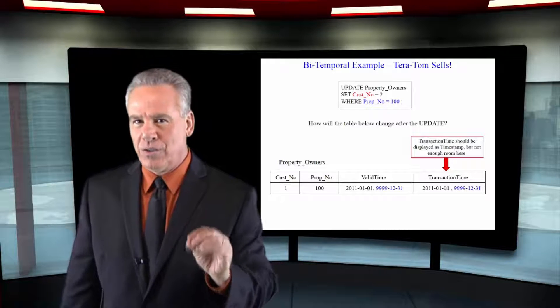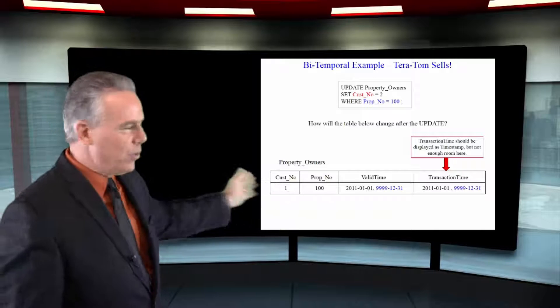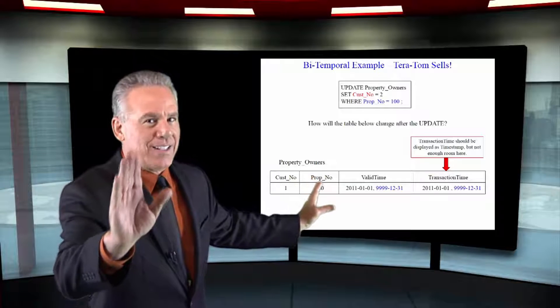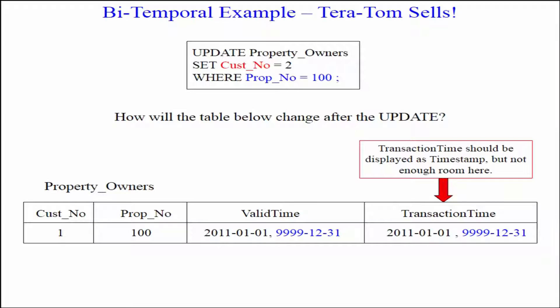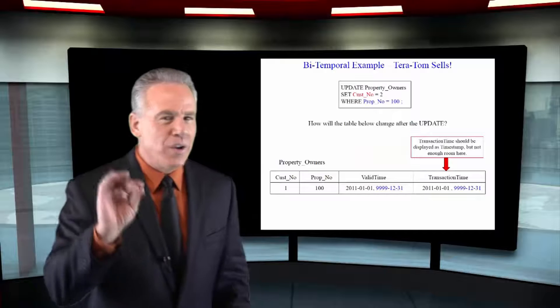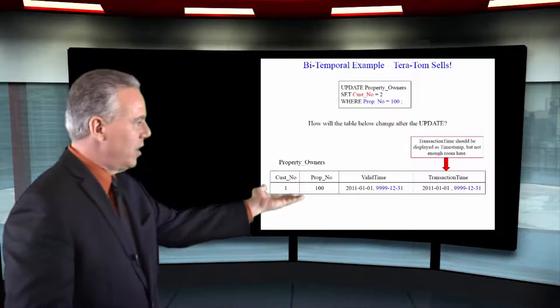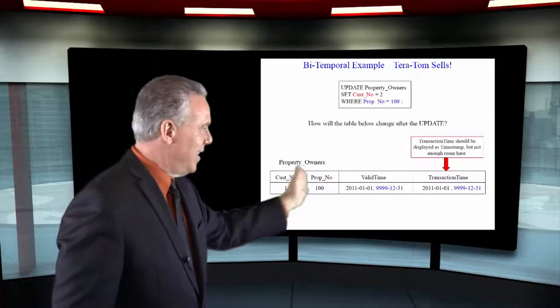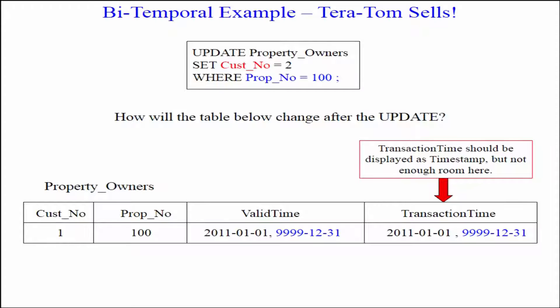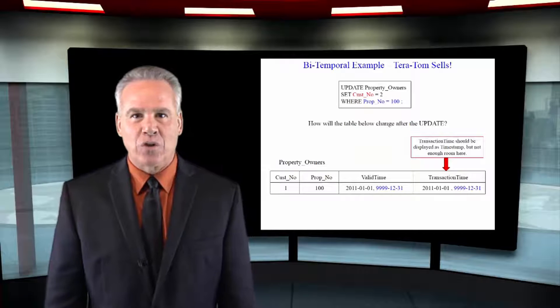Let me give you a couple of clues. Here's the row when Terra Tom owned this, and there was only one row in the table before this update statement. As you can see, the only thing that can ever change in a row of a bitemporal table is the last column, transaction time. If they want to do any insert, update, or delete, they'll just modify that last part of the period, and then they'll insert another row with the updated information. That's your clue. So after Socrates bought this and we did the update statement, my question is: how many rows will now be in our table, and what will those rows look like exactly?